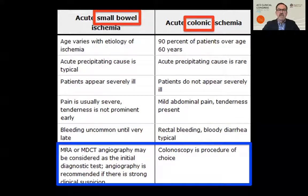The diagnostic test of choice in small bowel mesenteric ischemia is angiography, whether that's CTA, MRA, or conventional angiography, whereas for ischemic colitis, endoscopy is the mainstay of diagnosis.